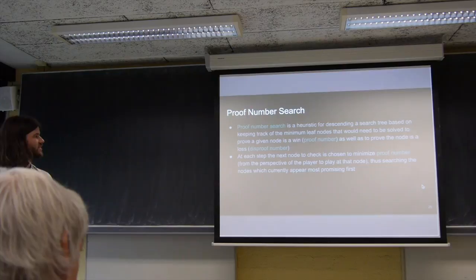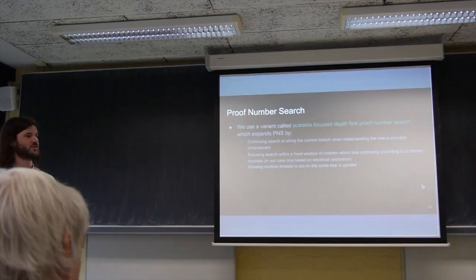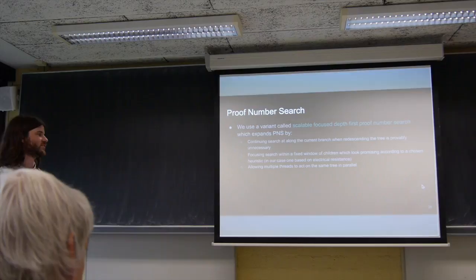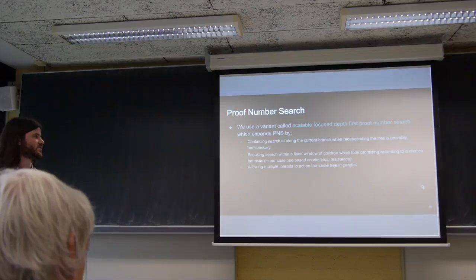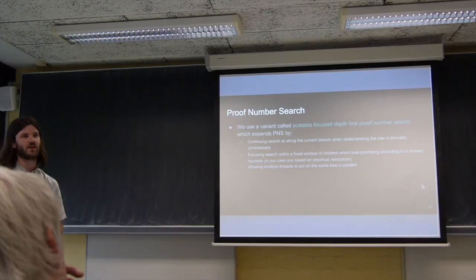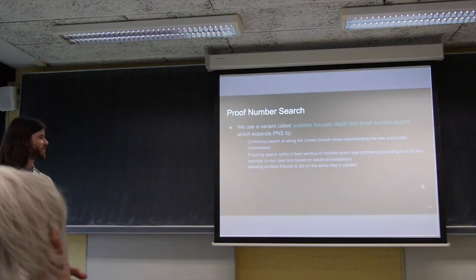We use a variant called scalable depth first proof number search, which is just a number of extensions on that. So it continues searches along branches that are when going back up to the very top of the tree and redescending is provably unnecessary. And it focuses the search within a fixed window of children, which you have to extend sometimes, but fixed immediately anyway. And which looks promising according to some heuristic. And in our case, we use an electrical resistive heuristic that's popular in a number of works on hex. And then finally, we allow multiple threat stacks, so it's a parallel version of it.